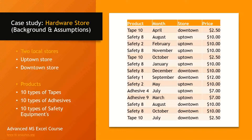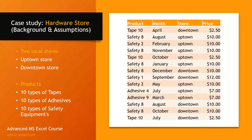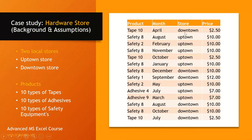Today we have a case study with local hardware stores. There are 2 local stores - the first is called the Uptown Store and the second is the Downtown Store. They sell 10 types of tapes, 10 types of adhesives, and 10 types of safety equipment. The data table has columns for product, month, store, and price. For example, tape number 10 in the month of April at the Downtown Store had a sale of $2.50.